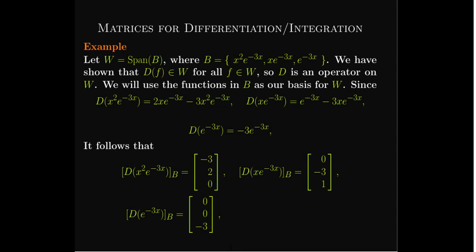The coordinate vector for D of x²e^(-3x) is (-3, 2, 0), because there is no term with just e^(-3x). When we take the derivative of xe^(-3x), we get e^(-3x) and -3xe^(-3x), so there's no x² term — giving us (0, -3, 1). And the derivative of e^(-3x) gives only a multiple of e^(-3x). Placing those vectors as columns gives us the matrix representation of the differential operator on subspace W using basis B.